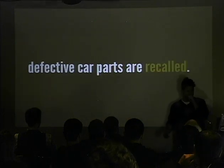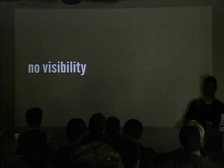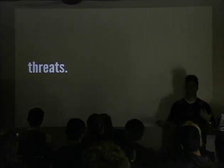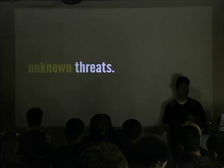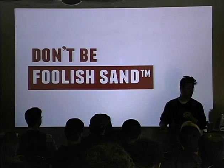Back to the car analogy: defective parts are recalled. If my 2005 Prius has a recall, the dealership calls and says 'bring your car in, we'll replace it.' They have a system for notifying you when something has changed. But how do you know when your software parts are being recalled? If you're not monitoring that 80% of your application, how do you know this stuff has changed? You have no visibility - you have unknown threats on a large attack surface. Don't be foolish sand.